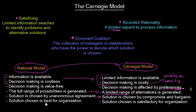The final and perhaps most striking contrast: under the rational model, the solution chosen is the best for the organization. But in reality, the solution chosen is merely satisfactory for the organization. You just try to satisfy all your organizational stakeholders to at least a minimum extent with the decision you make. That was the Carnegie model, and it is always useful to compare it with the idealistic rational model.